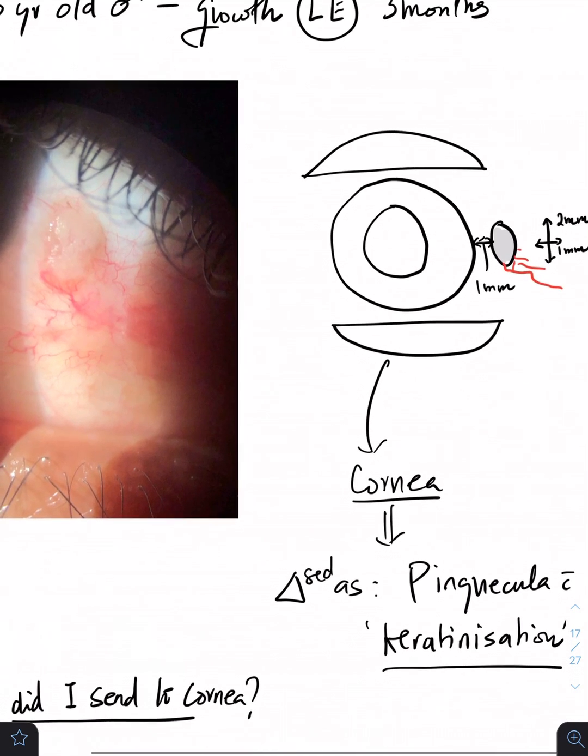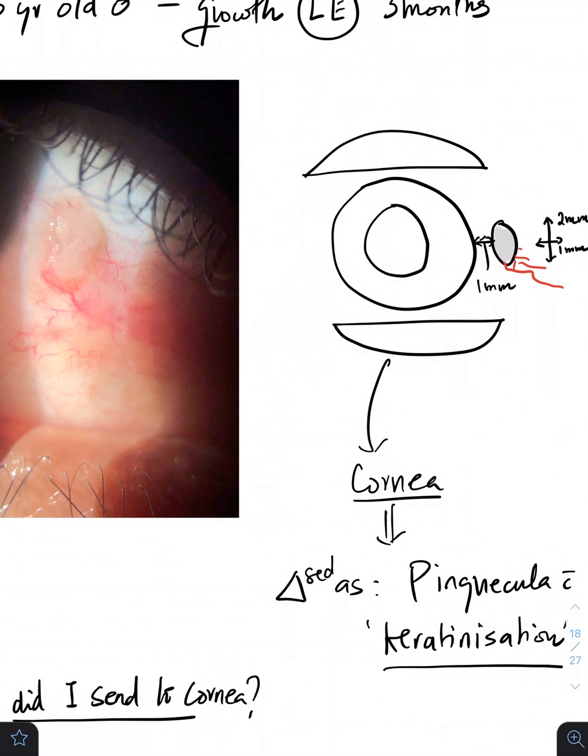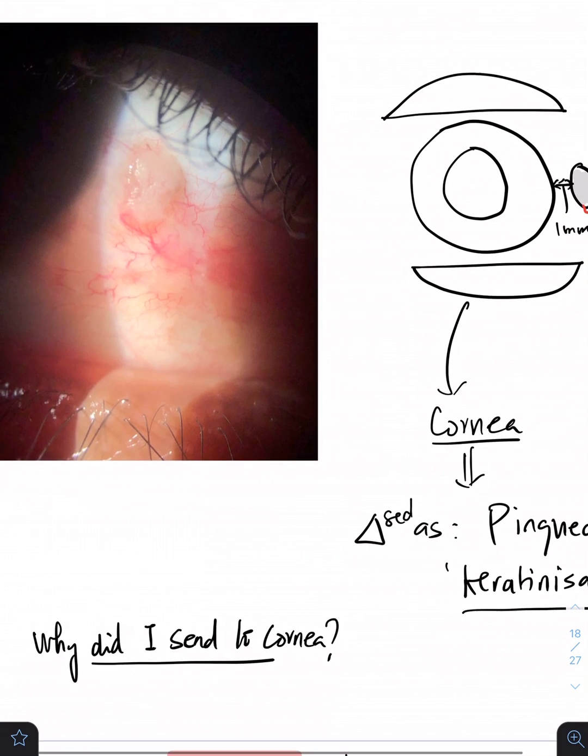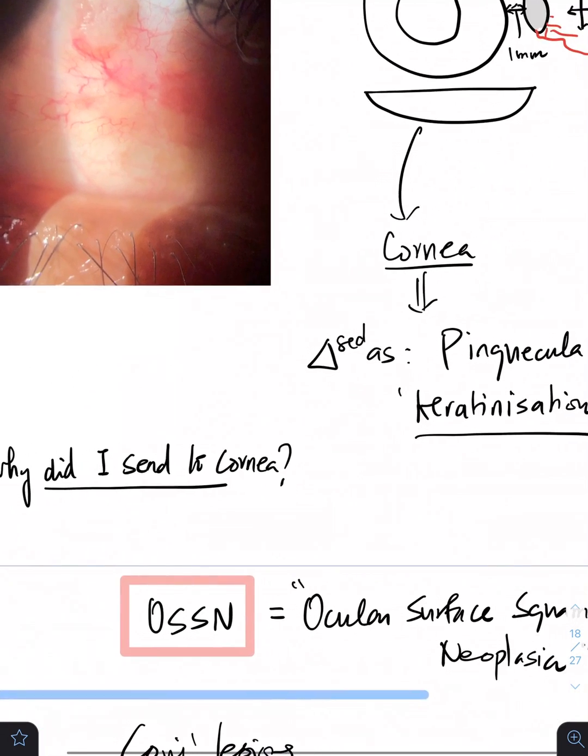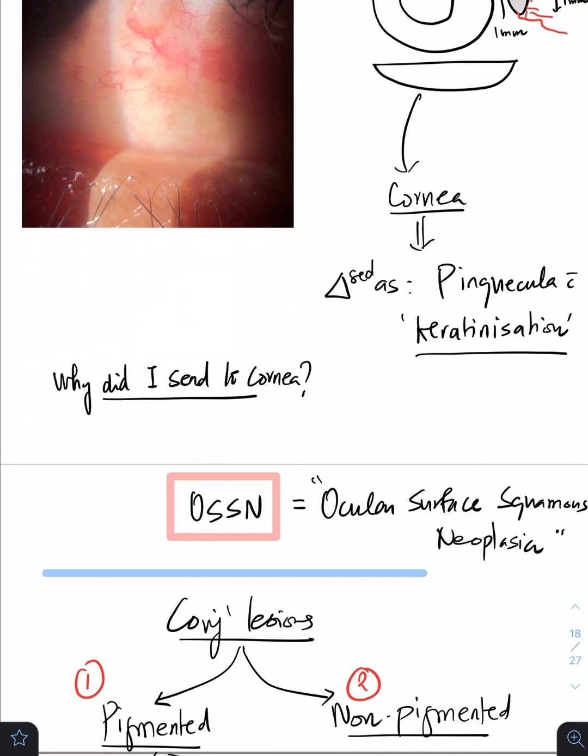I sent to cornea. In cornea they diagnosed as a pinguecula, just a pinguecula with keratinization. But why should I send this patient to cornea if this patient is going to be just pinguecula? Reason why I sent to cornea is because I suspected a very important lesion, just very easy to miss.